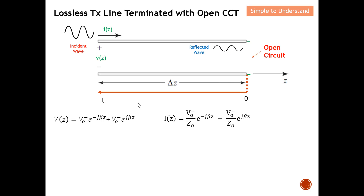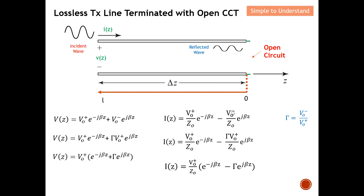On the previous few discussions on the transmission line, I mentioned these two sets of equations. From here, because the reflection coefficient is governed by this equation, I want to replace V₀⁻ with the reflection coefficient and V₀⁺ as shown here. So basically V₀⁻ is replaced with the reflection coefficient times V₀⁺. The same applies to the other part. Then I take out the common factor V₀⁺ and obtain this equation.